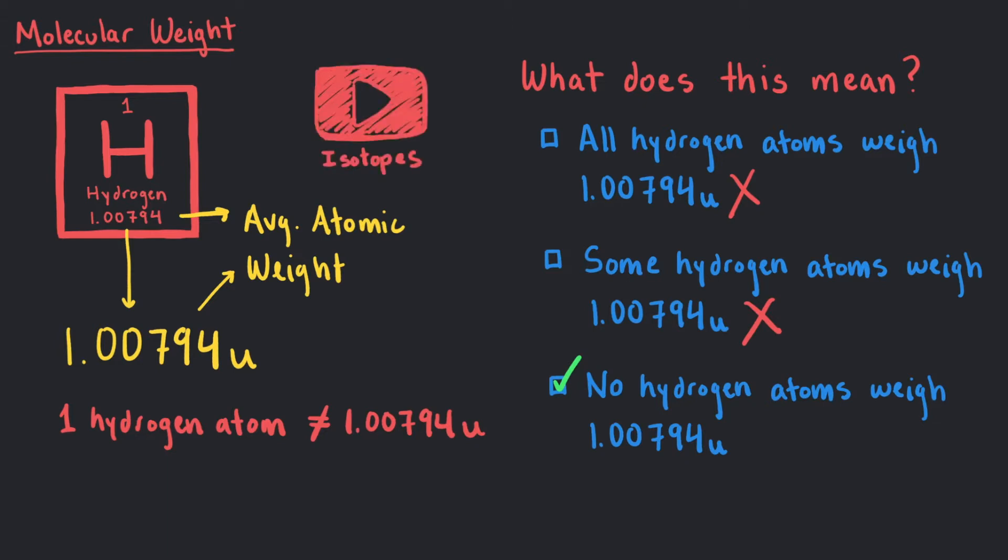Isotopes are a topic of another video. Let's just say for now that there are some hydrogens that weigh a little more or a little less depending on each atom's exact composition, but we will use this number on the periodic table, the average weight of an atom, to help us calculate our molecular weight.